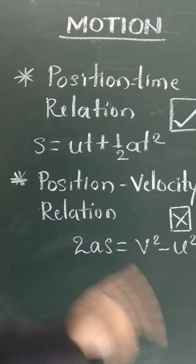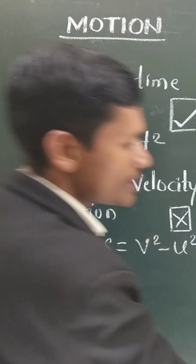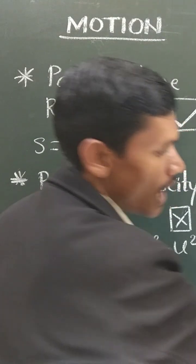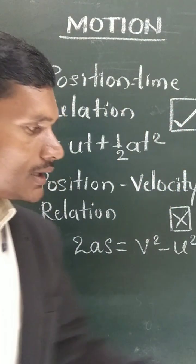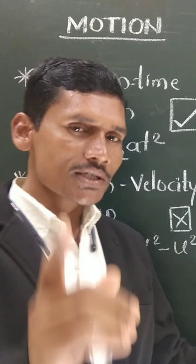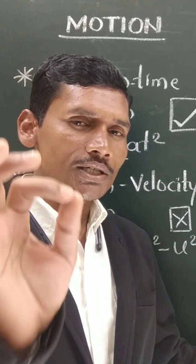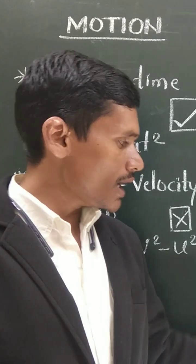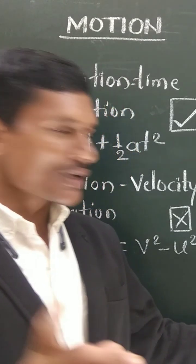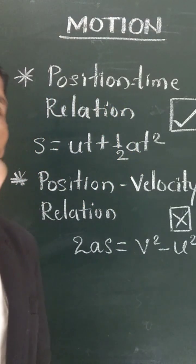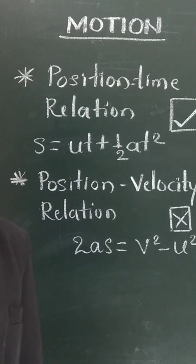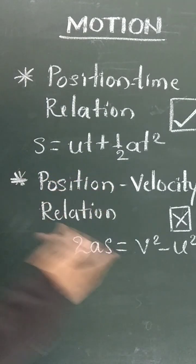Then you need to use the equation s = ut + ½at². This is the equation used for position-time relation, as it is given here.